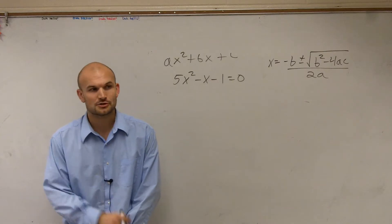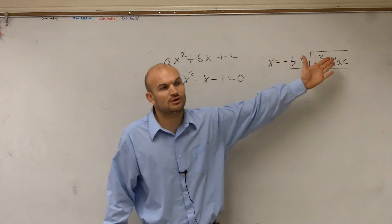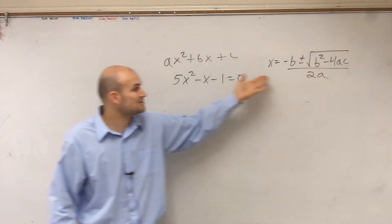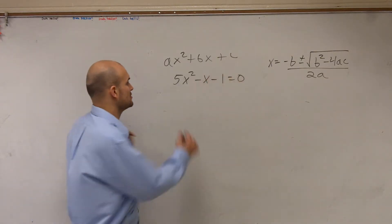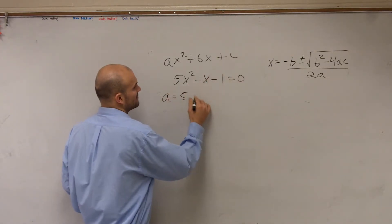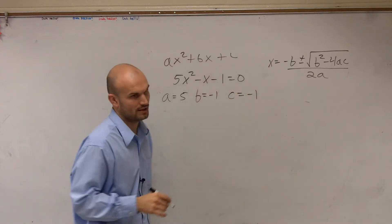Now, here's the cool thing about the quadratic formula. First of all, do you guys see that we're only dealing with a, b, and c, right? In a quadratic, can we figure out what our a, b, and c are? Which we already did, right? So we already know that a equals 5, b equals negative 1, and c also equals negative 1.